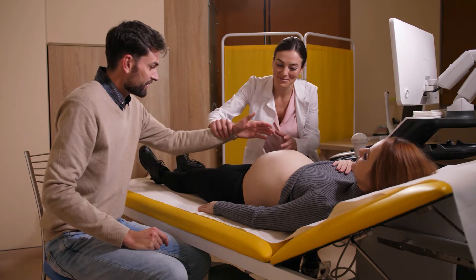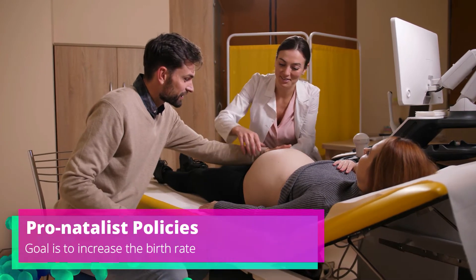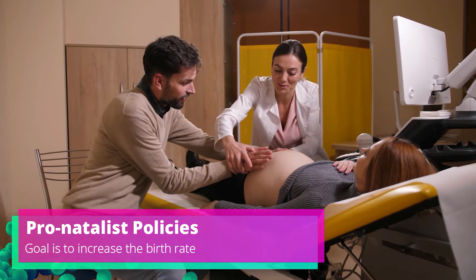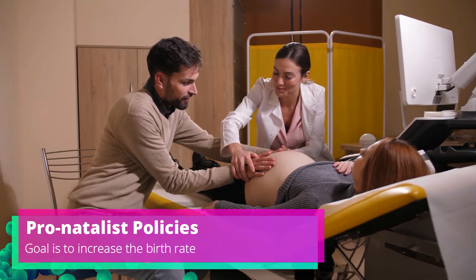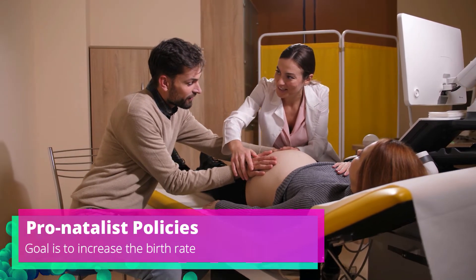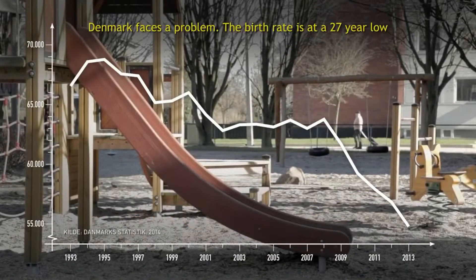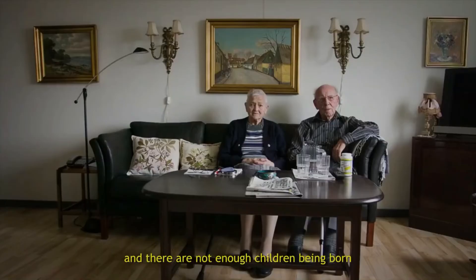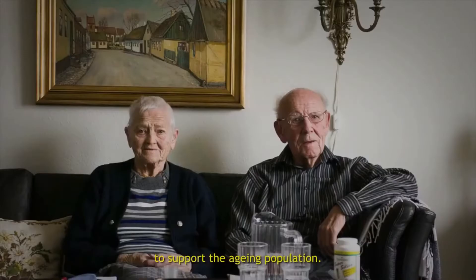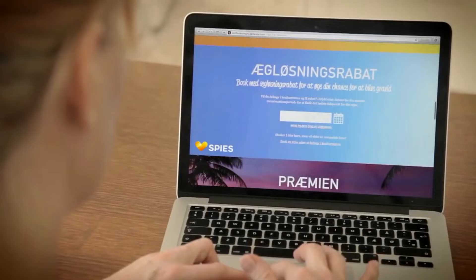We're going to talk about pronatalism and antinatalism. These are two different ways in which governments actually can pass policy or influence society to either deter births or promote births. Now the first topic we're going to talk about is pronatalist policies. These are policies that actually promote people to have larger families, to have more kids. This happens by the government or organizations using things like propaganda, offering tax incentives, essentially making it easier for people to have children. A lot of times it involves economics.